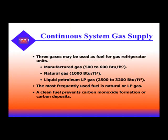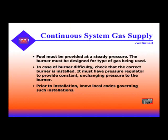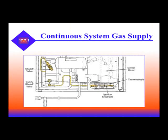Three gases can be used as fuel for gas refrigeration: manufactured gas, natural gas, and liquid LP. The most frequent use is natural gas and liquid LP. A clean fuel prevents carbon monoxide formation or carbon deposits. Fuel must be provided at steady pressure. The burner must be designed for the type of gas being used. In case of burner difficulty, check that the correct burner is installed. It must have a pressure regulator to maintain constant pressure to the burner. Prior to installation, know the local codes governing such installations.